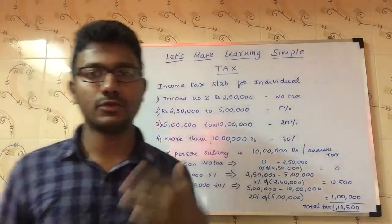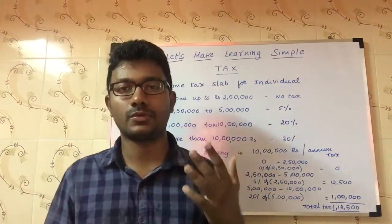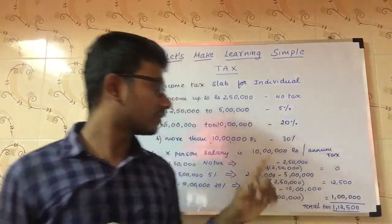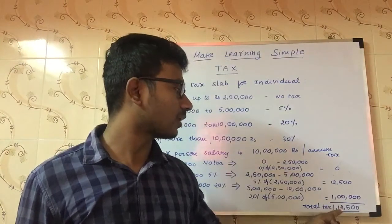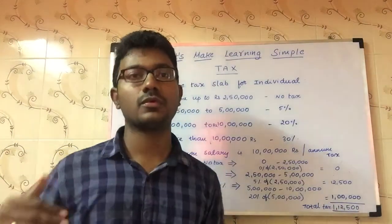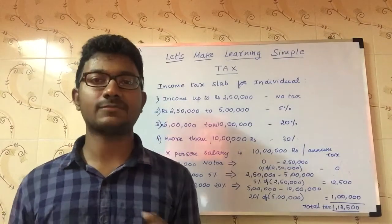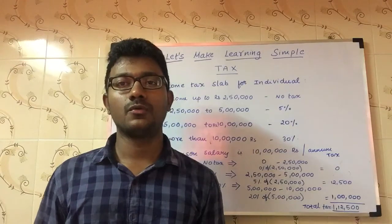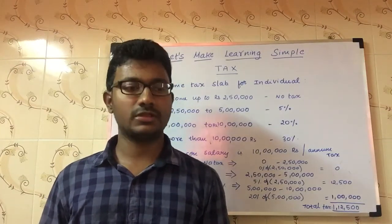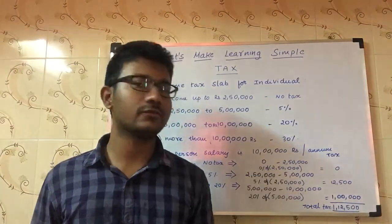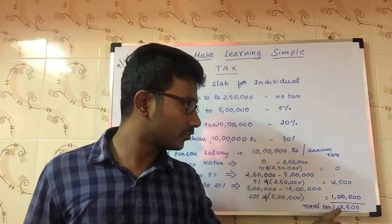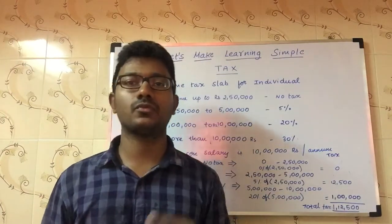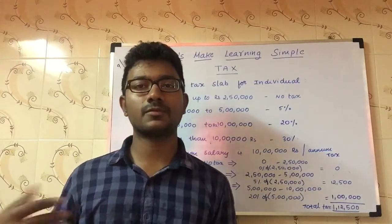This is for the individual category. If you need a video for the senior citizen or super senior citizen category, please comment and I will put those videos up as well. In the next videos, we will see how we can reduce this 1,12,500 rupees by using investment schemes, which will be very helpful for people who have recently started working. We will talk more about investment schemes in the upcoming videos.